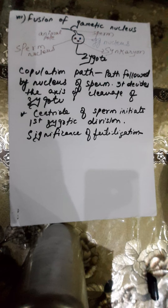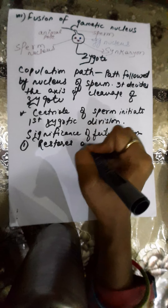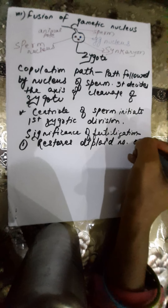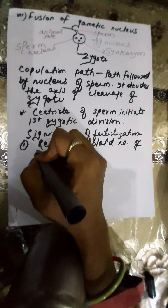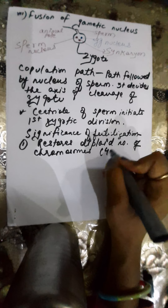It restores the diploid number of chromosomes. The diploid number of chromosomes means 46 in humans. How? Through the combination of the male haploid set and the female haploid set.